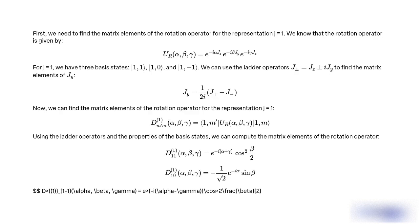First, we need to find the matrix elements of the rotation operator for the representation J equal to 1. We know that the rotation operator is given by UR(alpha, beta, gamma) equal to E^(-i alpha Jz) E^(-i beta Jy) E^(-i gamma Jz). For J equal to 1, we have three basis states: |1,1>, |1,0>, and |1,-1>.